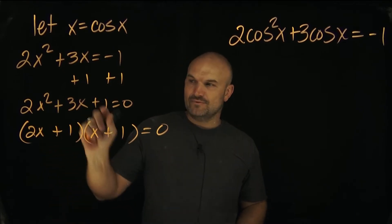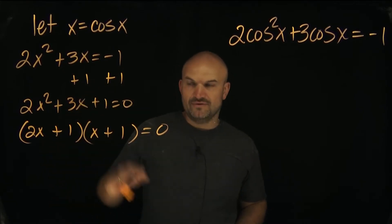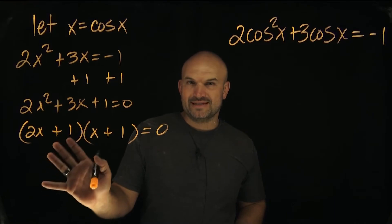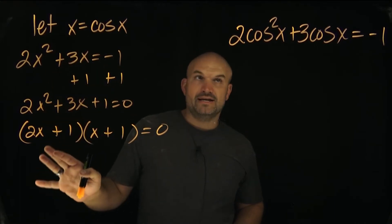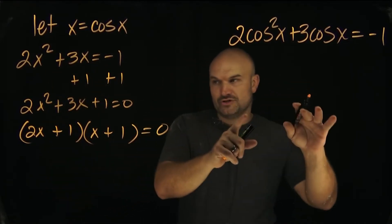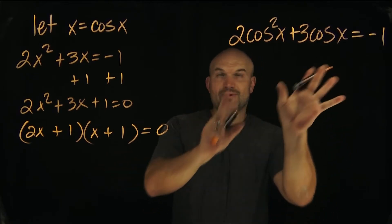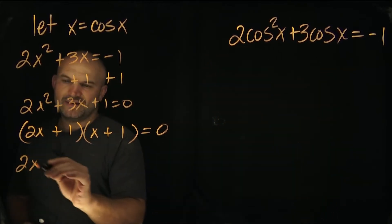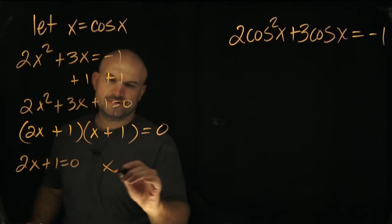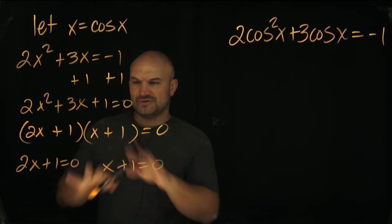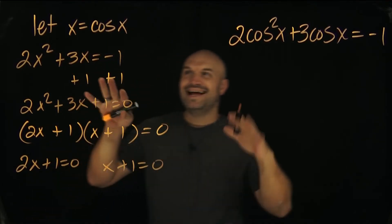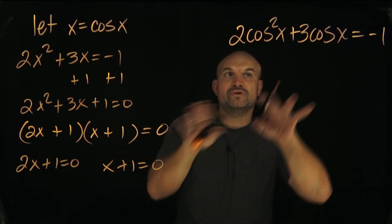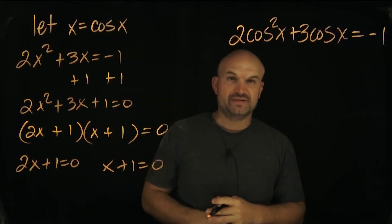Now again, in this case, we can apply zero product property, and we could solve. But at this point, I think we did the hard work with the factoring, right? So now what we're going to do is I'm going to go back to my substitution, and I'm just going to go ahead and rewrite them. Let's go to 2x plus 1 equals 0, x plus 1 is 0. Okay, so now we applied the zero product property. Now, let's go back and rewrite this in this factored form from the zero product property.